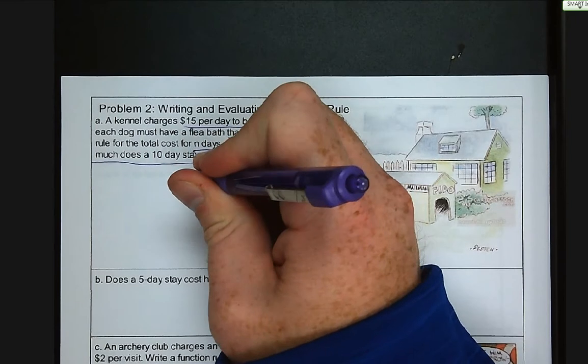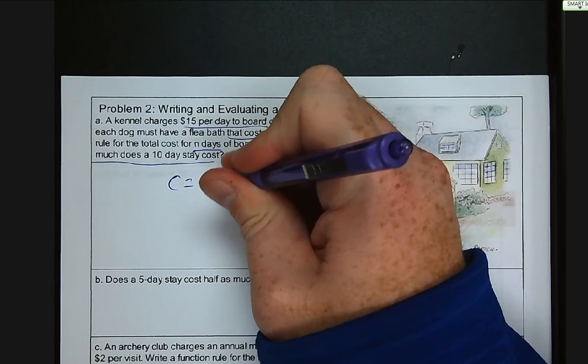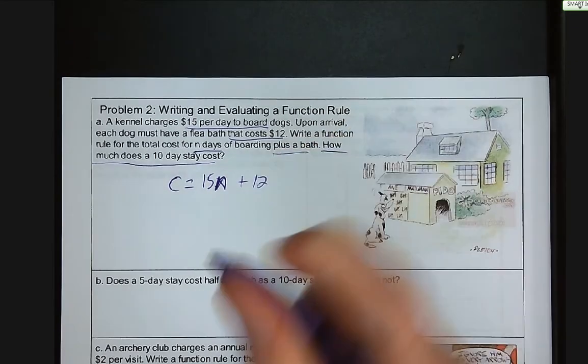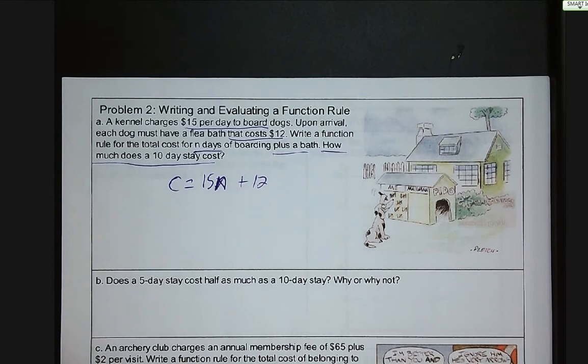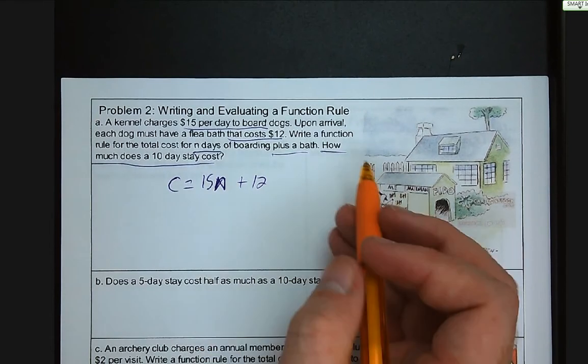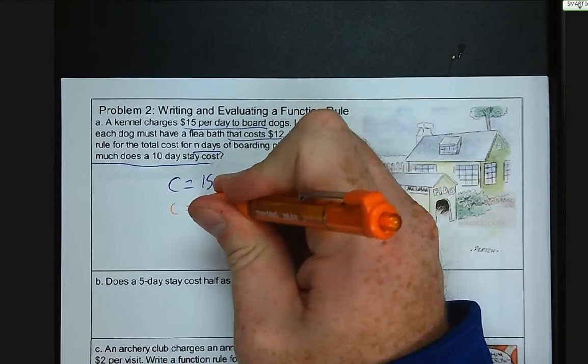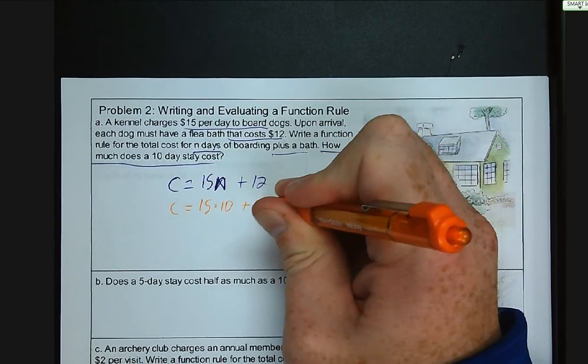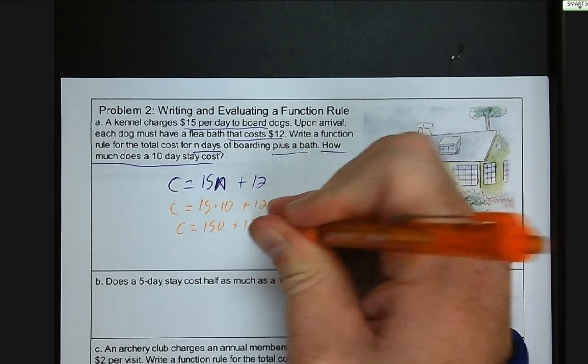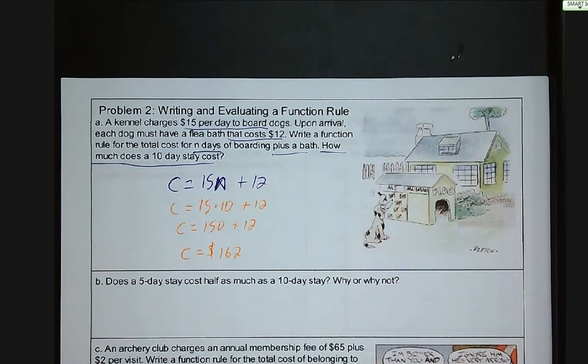We've got cost is equal to $15 per day times n, they gave us a variable to work with, n days, plus our $12 flea bath. So that's our function rule. But the second part, how much does a 10-day stay cost? We need to substitute 10 in for the number of days. So 15 times 10 plus 12. 15 times 10 is 150 plus 12. So the cost to board the dog for 10 days is $162. Do not forget your units.